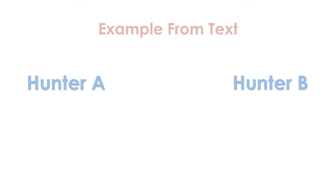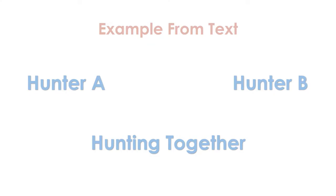Here are examples from the text. Moore discusses Hunter A, who has developed a style of hunting that entails approaching prey from the left, and Hunter B, who approaches prey from the right. When each hunts individually, they only capture one prey while the other escapes in the opposite direction. One day they ended up hunting together — Hunter A from the left and Hunter B from the right — and because they worked together the prey was essentially trapped, giving them access to more prey than they would have independently.